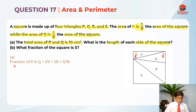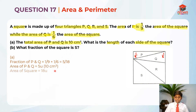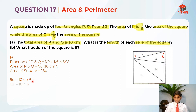For Part A, I'm going to find the fraction of P and Q together, which is 1/9 plus 1/6, which is 5/18. So 5/18 of the square equals 10 cm². That means 5 units is equal to 10 cm², so 1 unit is equal to 10 divided by 5, which is 2 cm².